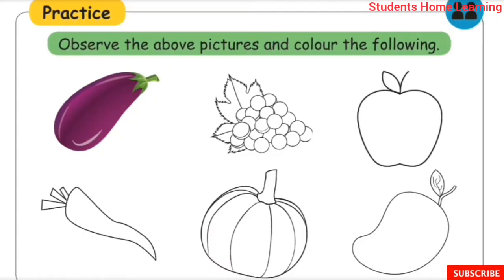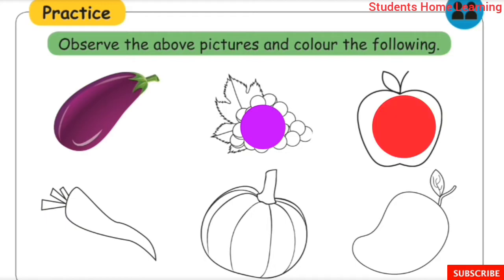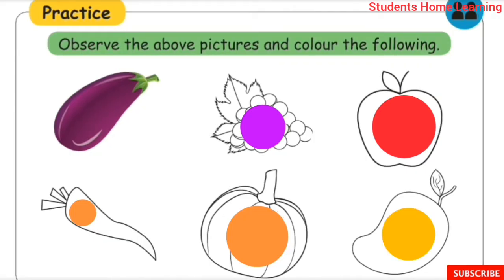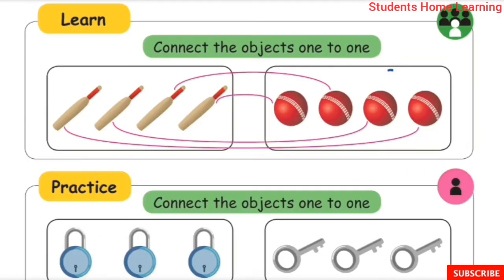Brinjal — purple color. Grapes — purple color. Apple — red color. Carrot — orange color. Pumpkin — orange color. Mango — yellow color. Match the colors correctly.